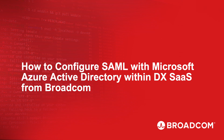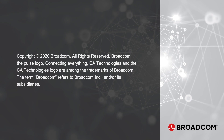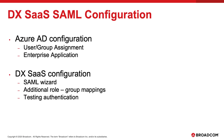In today's video, we're going to cover how to configure DX SaaS using SAML for authentication with Azure Active Directory as the identity provider. The configuration has two major steps. In step one, we configure Azure Active Directory for the enterprise application and record some information we'll need in step two. In step two, we actually configure DX SaaS to use SAML authentication.